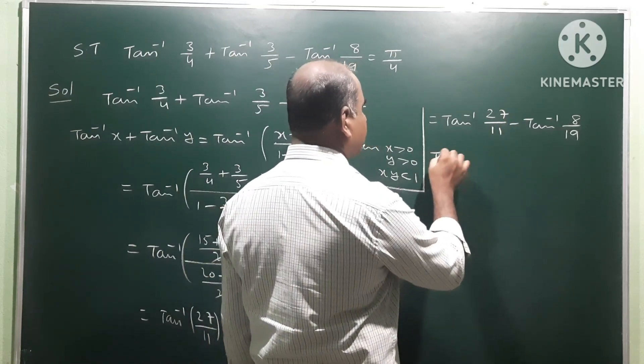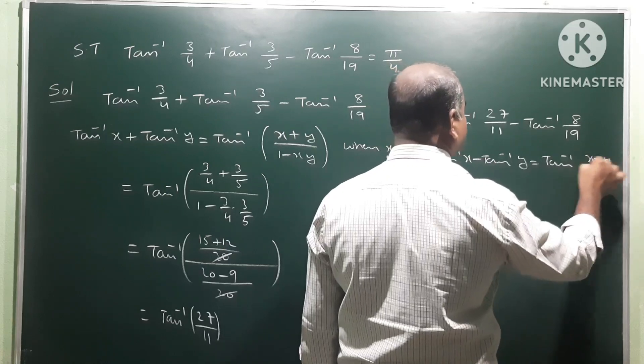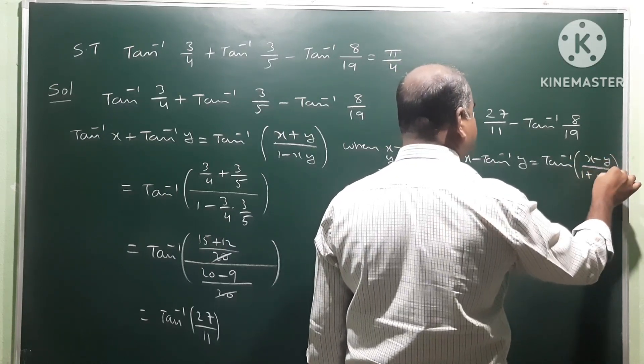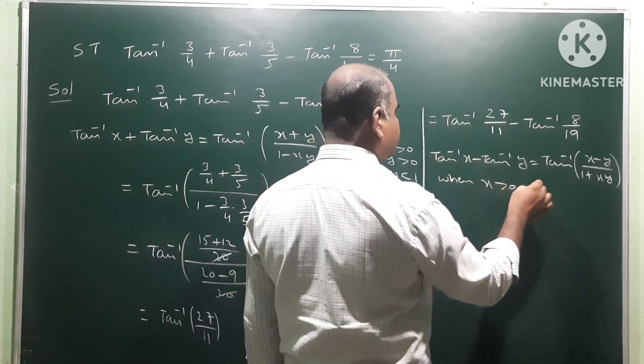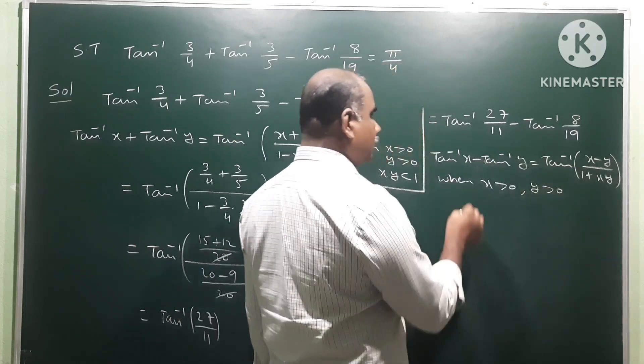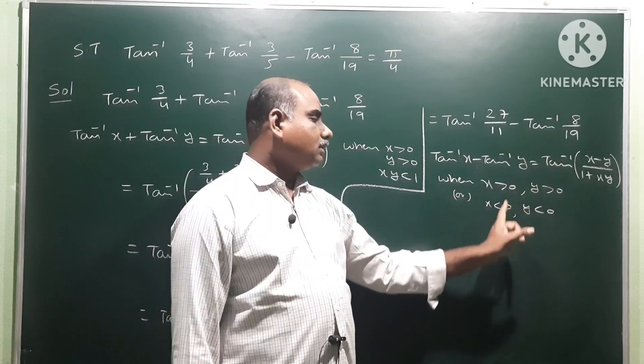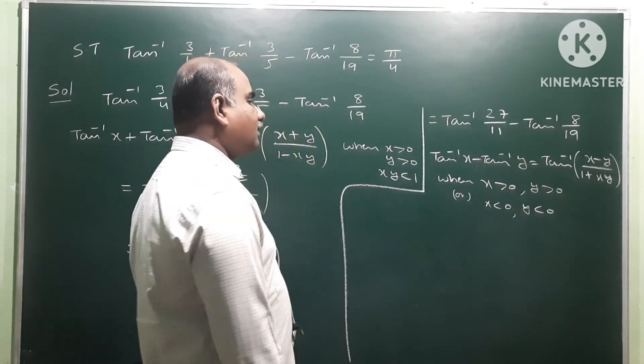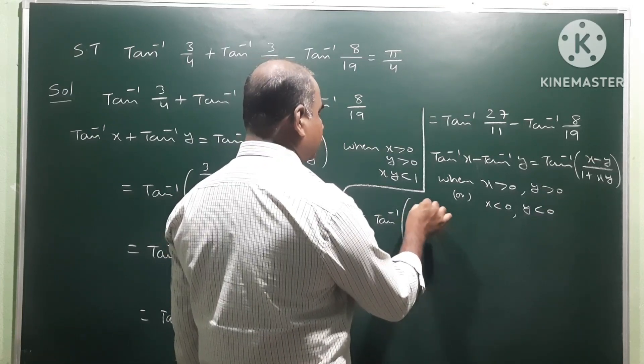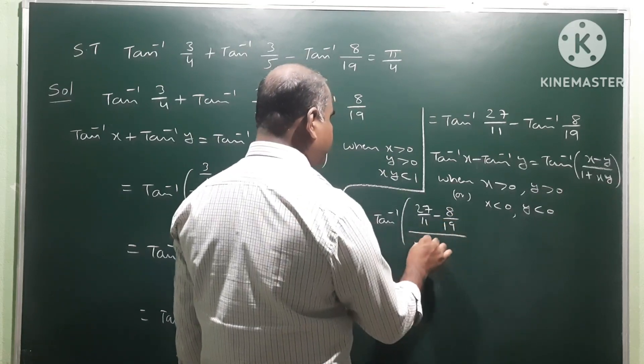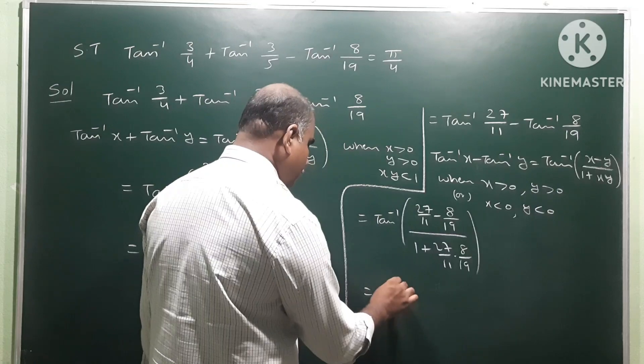is minus, so the formula is tan inverse x minus tan inverse y equals tan inverse x minus y by 1 plus xy. This formula applies when x greater than 0, y greater than 0. Therefore, tan inverse x means 27 by 11 minus y minus 8 by 19, by 1 plus 27 by 11 into 8 by 19.